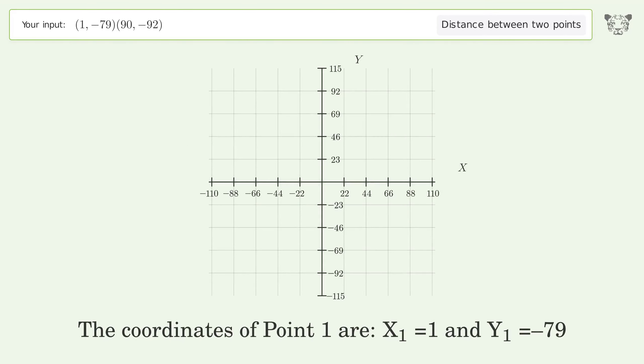The coordinates of point 1 are x1 equals 1 and y1 equals negative 79. The coordinates of point 2 are x2 equals 90 and y2 equals negative 92.